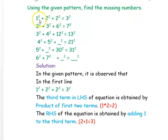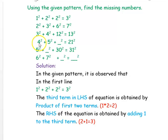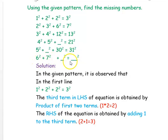The given pattern is: 1² + 2² + 2² = 3². Then 2² + 3² + 6² = 7². Next, 3² + 4² + 12² = 13². The fourth line is 4² + 5² + (dash)² = 21². The fifth line is 5² + (dash)² + 30² = 31². The sixth line is 6² + 7² + (dash)² = (dash)². We want to find all these missing numbers.